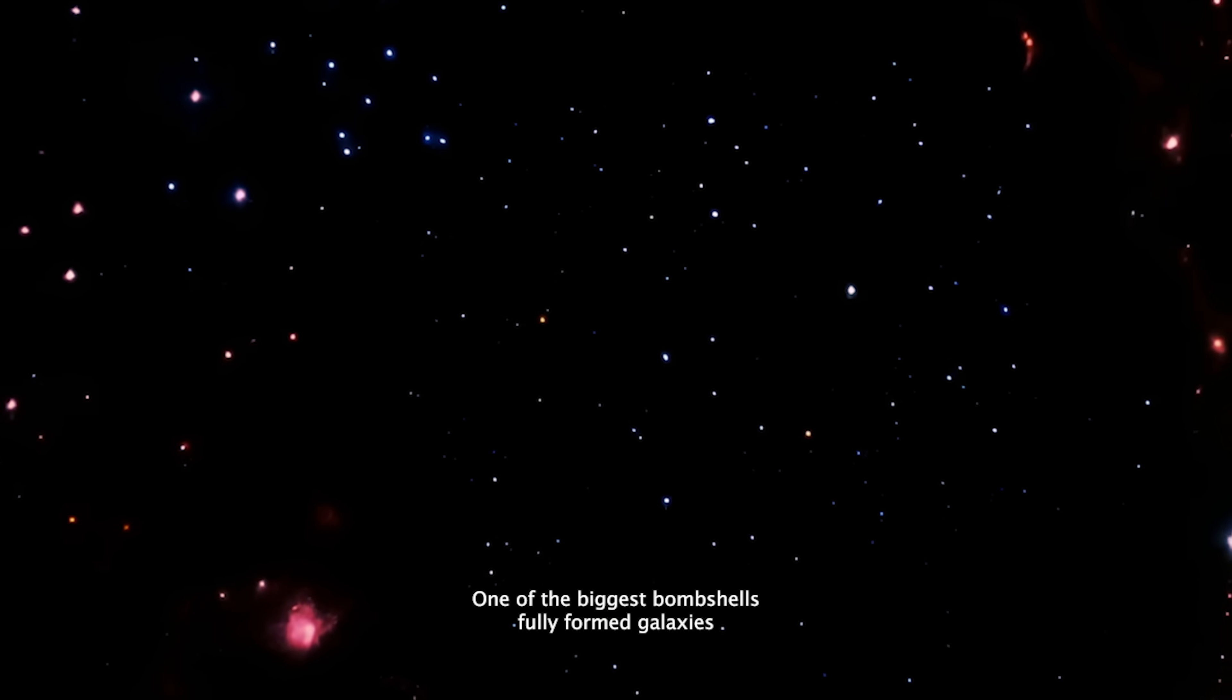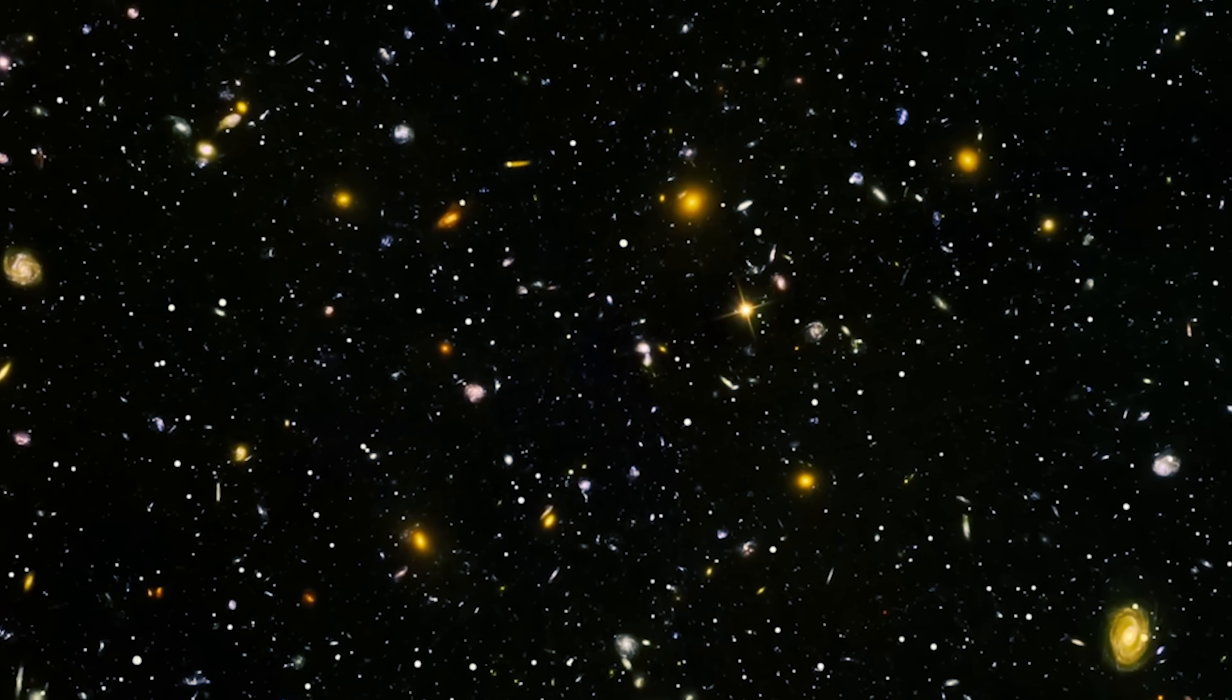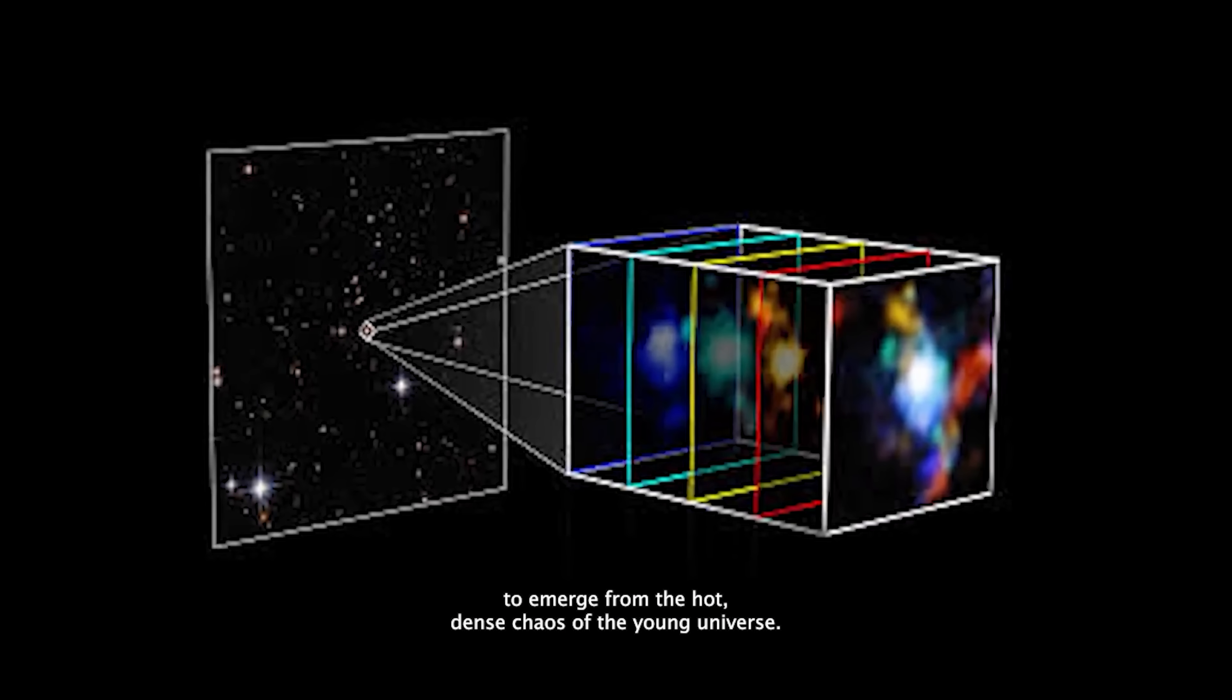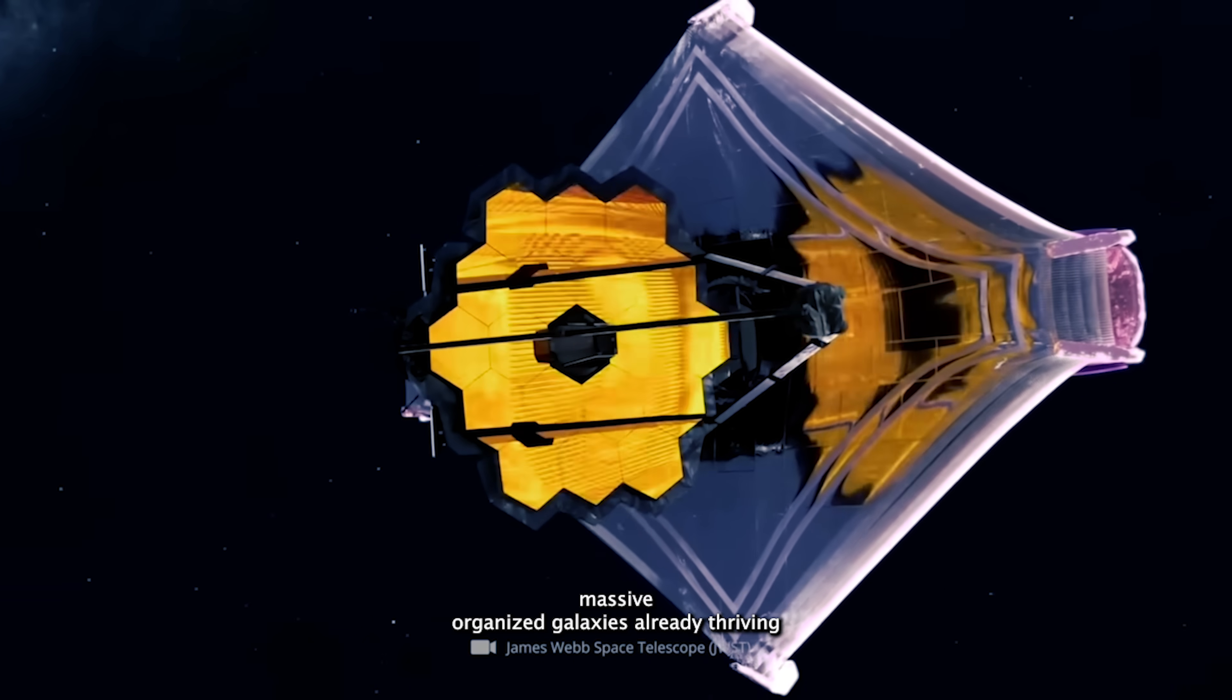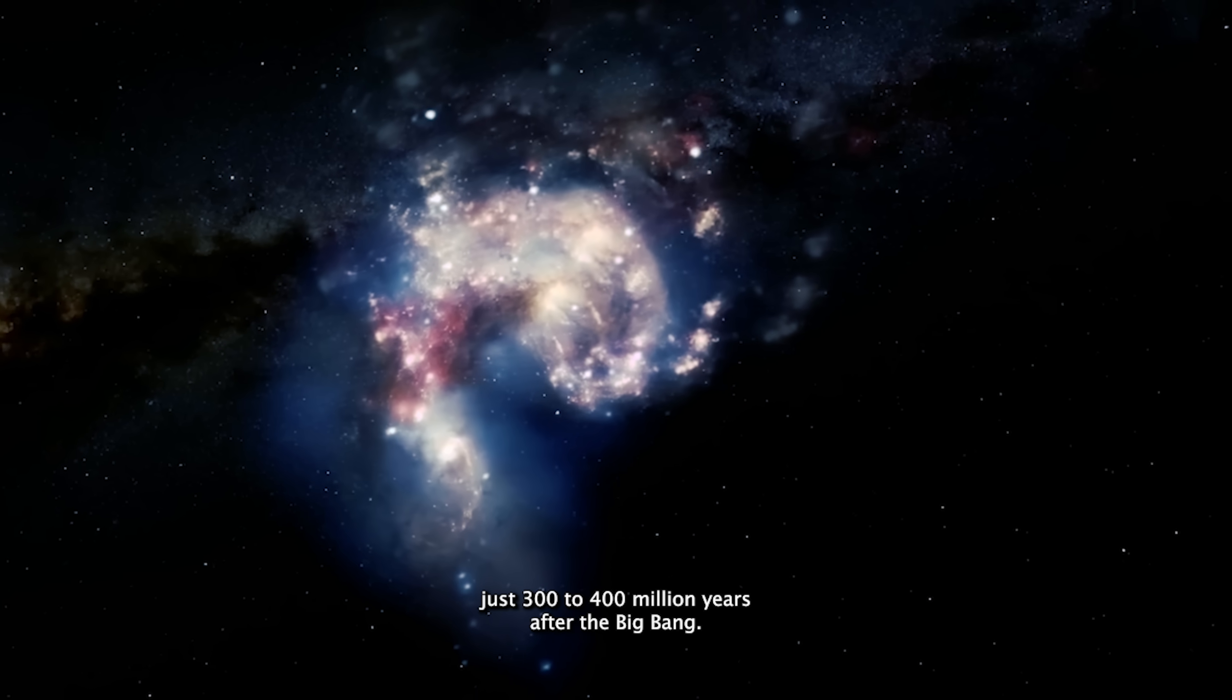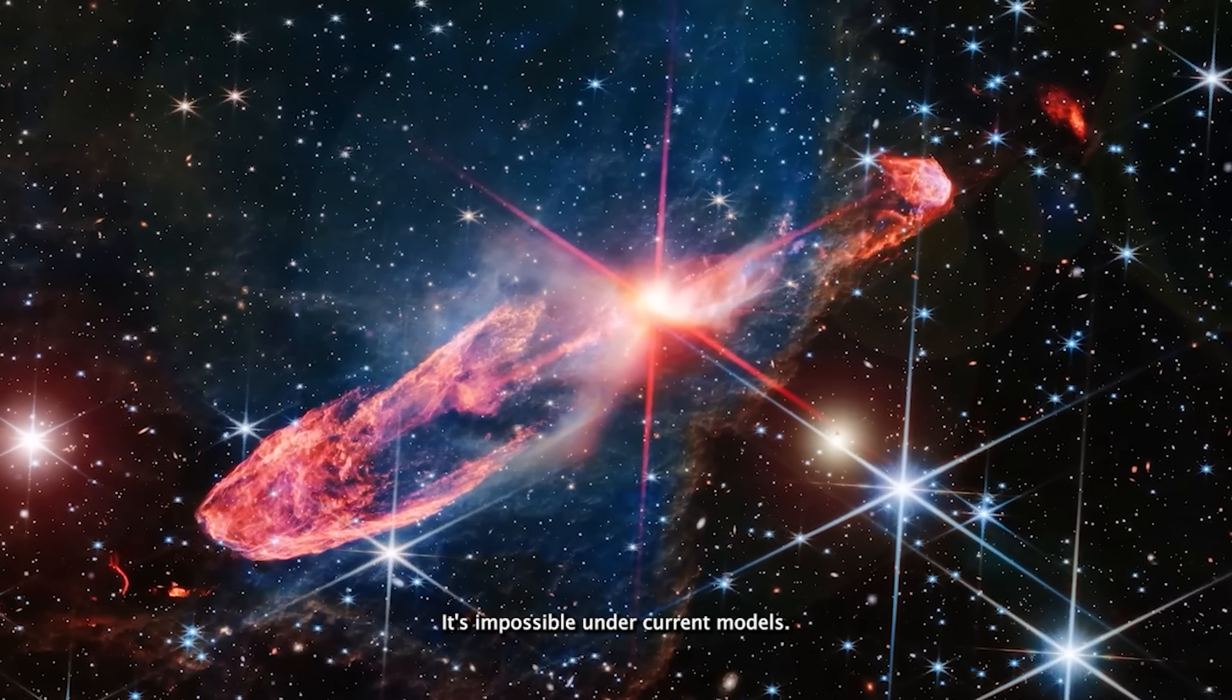One of the biggest bombshells? Fully formed galaxies showing up way too early. According to established theories, it should have taken hundreds of millions of years for stable galaxies to emerge from the hot, dense chaos of the young universe. But the Webb telescope is finding dozens of massive, organized galaxies already thriving just 300 to 400 million years after the Big Bang. In short, what we're seeing isn't just surprising, it's impossible under current models.